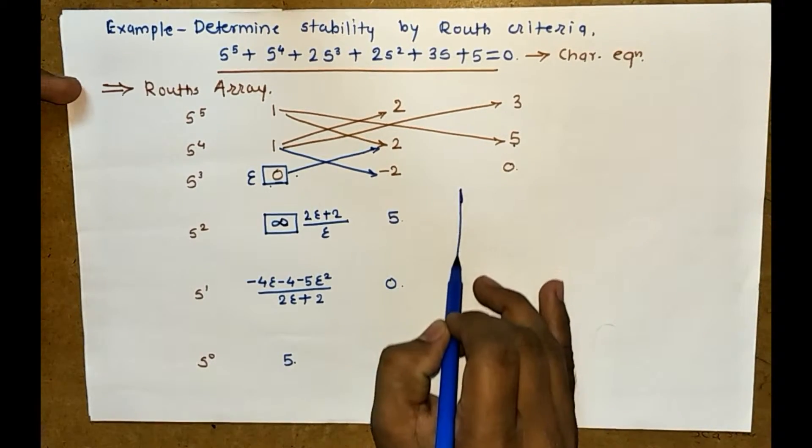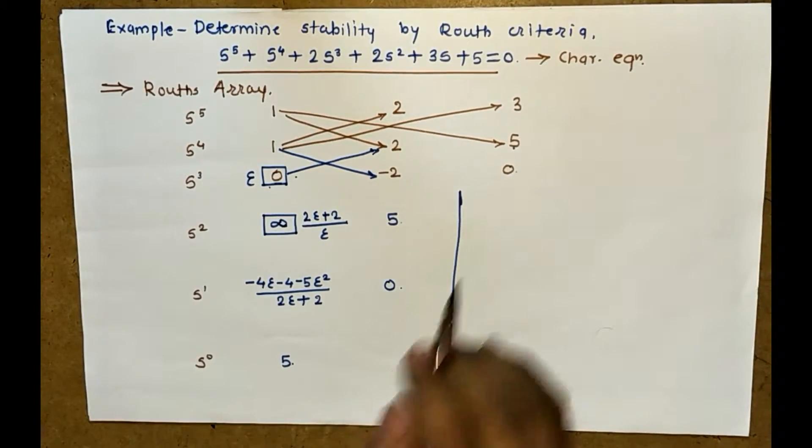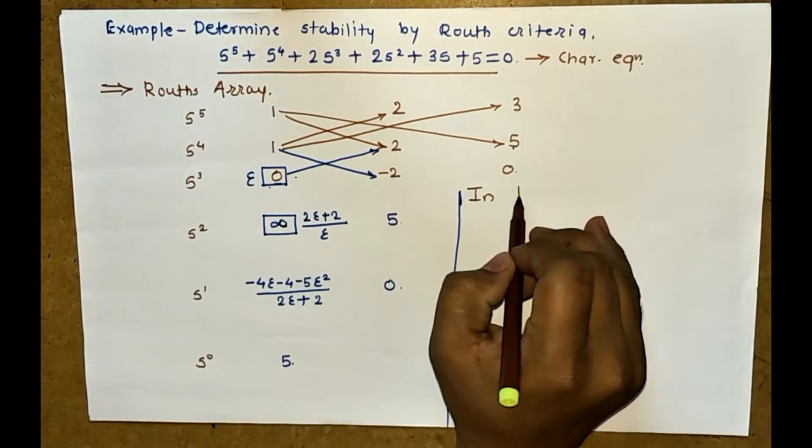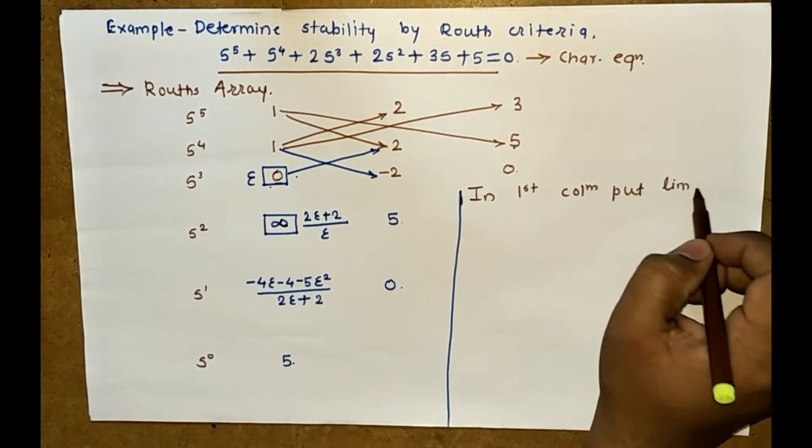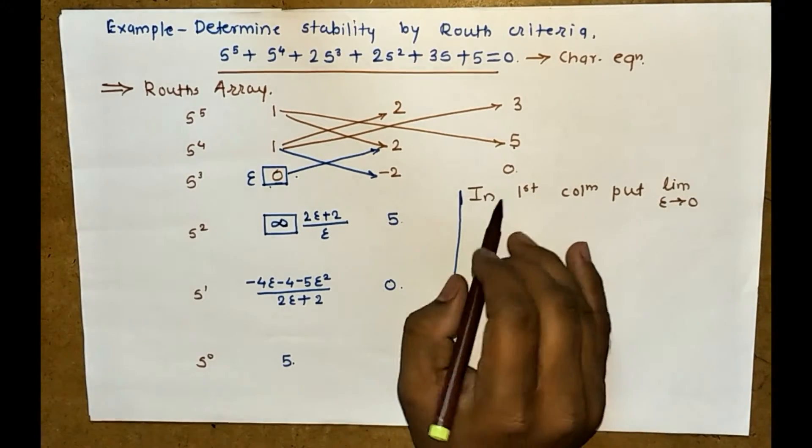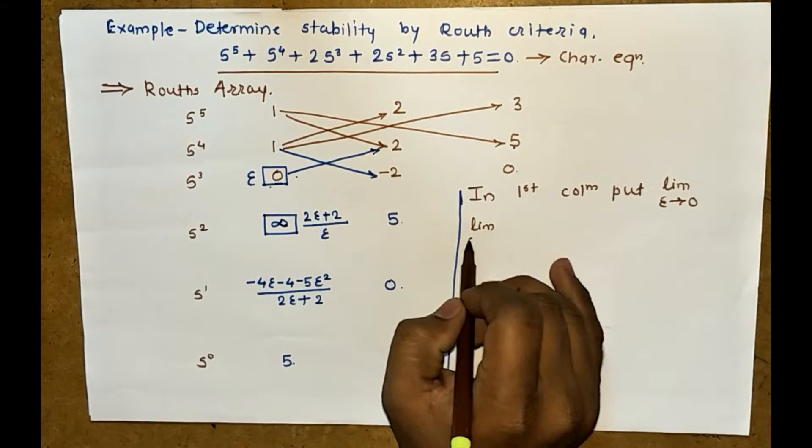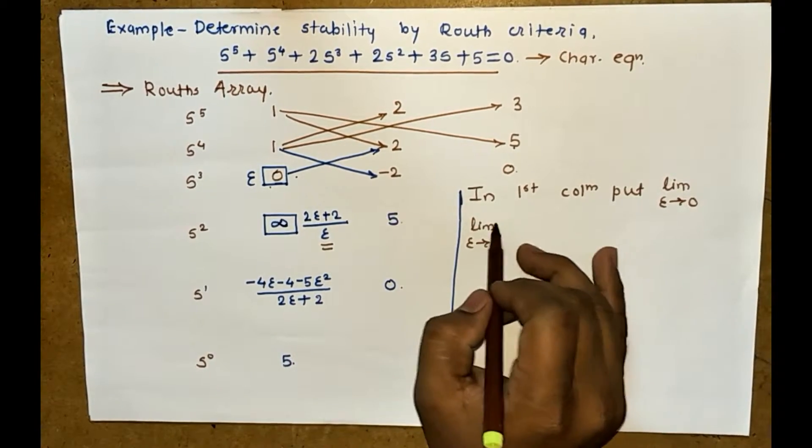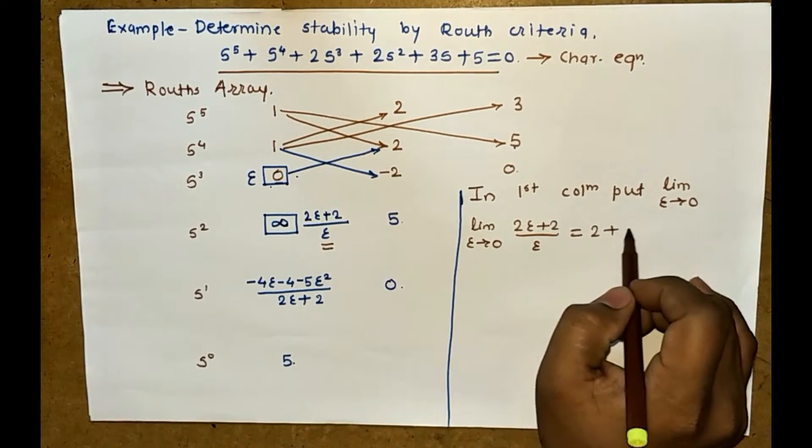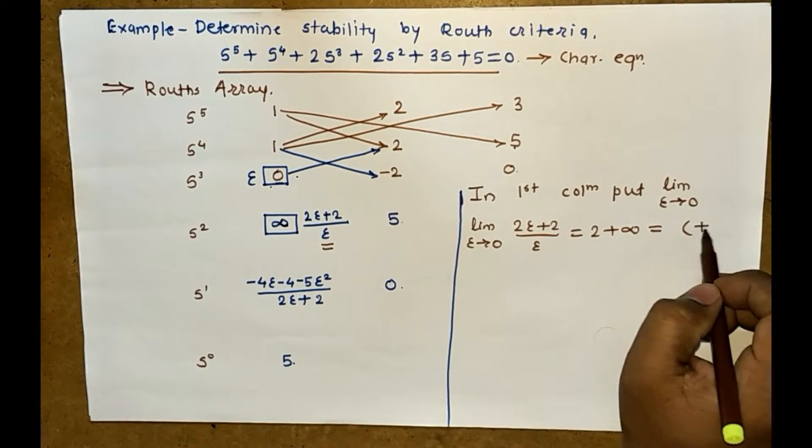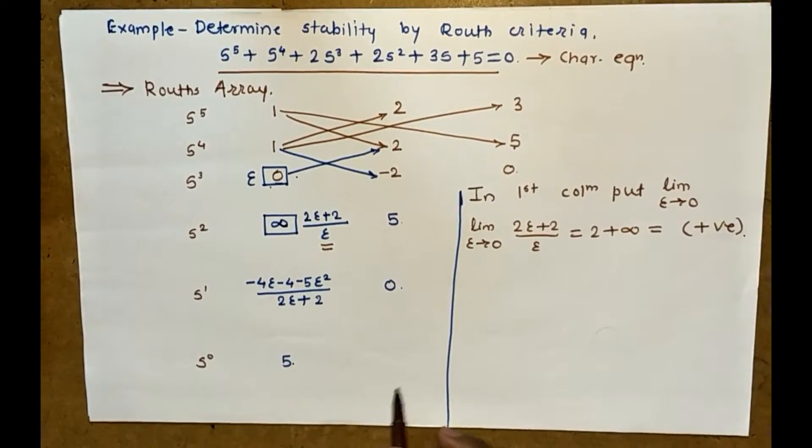Now to find out the signs in the first column, put limit epsilon tends to 0 for the first term. For this term I am substituting the limit: 2 epsilon plus 2 divided by epsilon. After putting the limit, you get 2 plus infinity. Now your sign is positive. 2 plus infinity is positive.